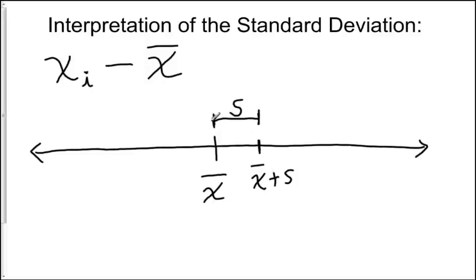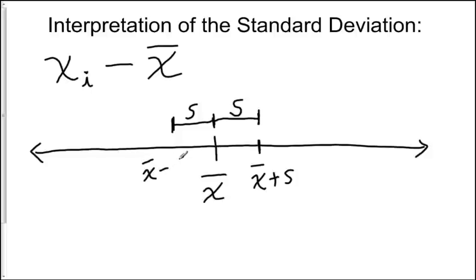Going in the other direction — because values don't just deviate in one direction; some are larger than the mean and some are smaller — you can go S units in the other direction and get to X-bar minus S. On average, the values below the mean are about this far away from the mean.